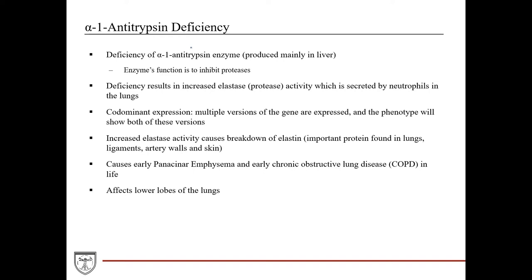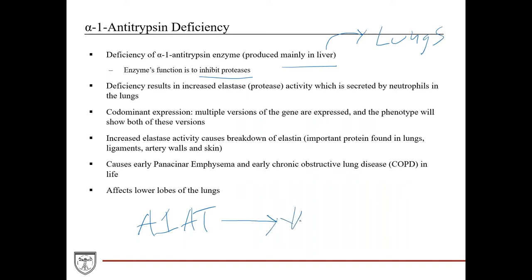Next, alpha-1 antitrypsin deficiency. Alpha-1 antitrypsin is produced in the liver — it's an enzyme that inhibits proteases — but it mainly functions in the lungs. It's synthesized in the liver and makes its way to the lungs, where it decreases or inhibits elastase activity.